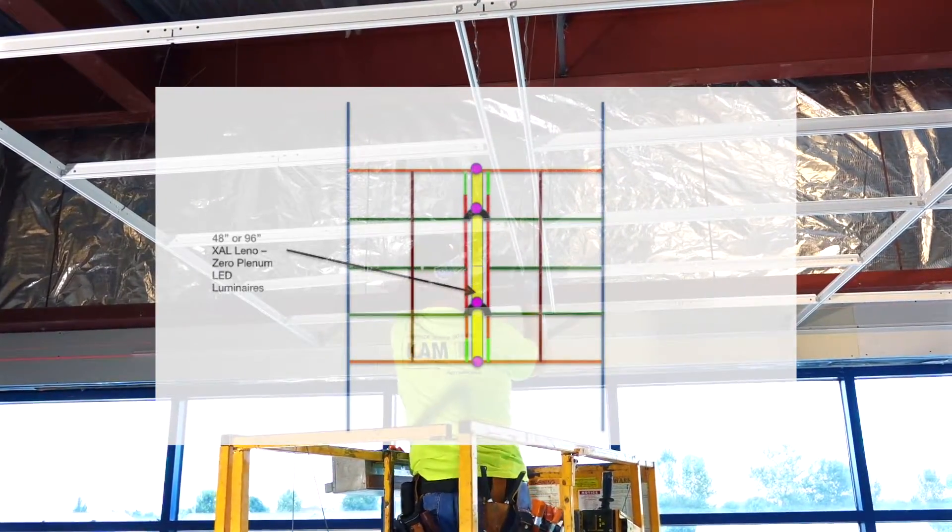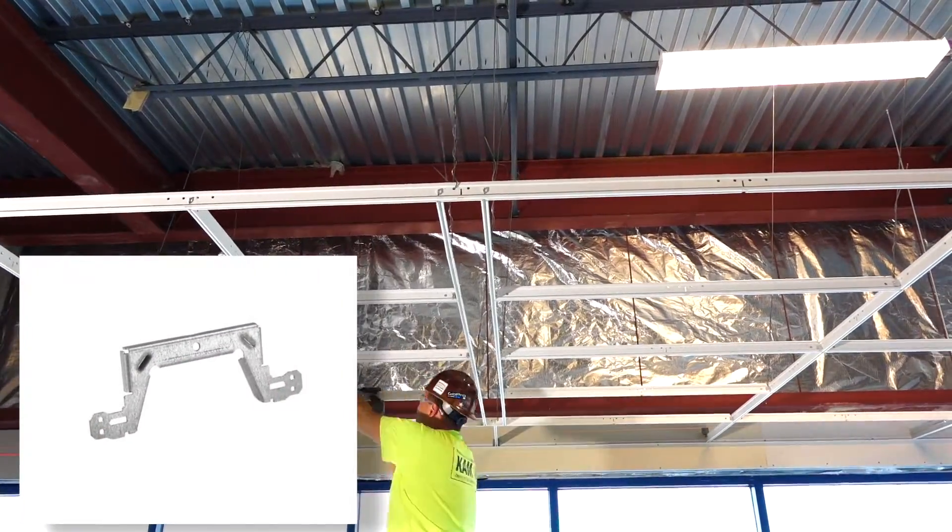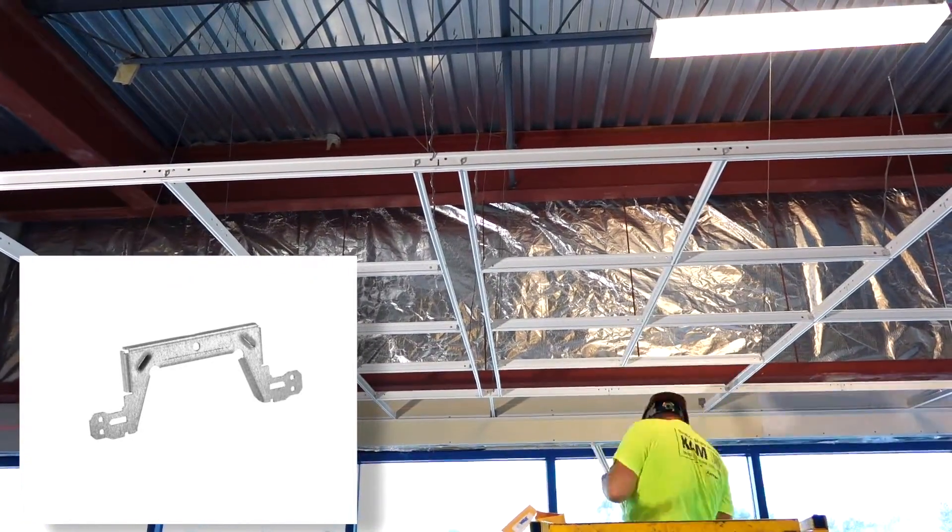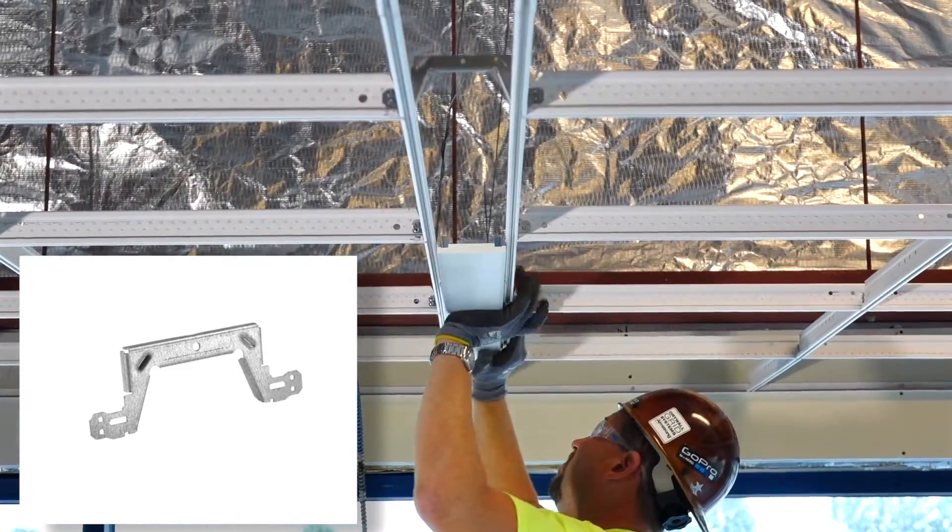After T's are installed, 4-foot on-center lighting connector brackets are installed, which eliminate the need to independently wire your fixtures to structure.